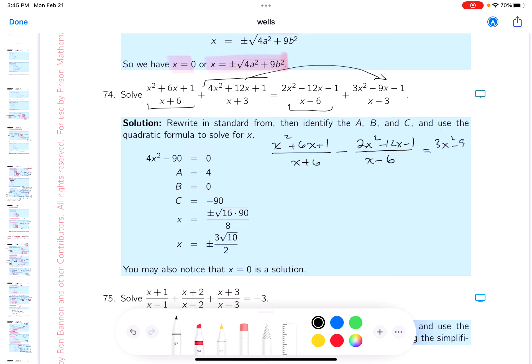All right maybe I should write that down, so that would be (3x²-9x-1)/(x-3) minus, I gotta jam it in there, (4x²+12x+1)/(x+3).